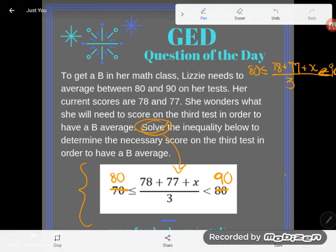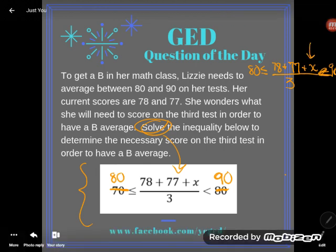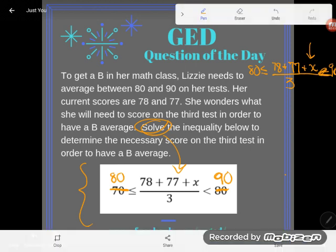Now this might look scary to solve, but it's actually pretty simple. Just like always when you're trying to solve, your goal is to get the letter alone. So my goal here is to get X alone.